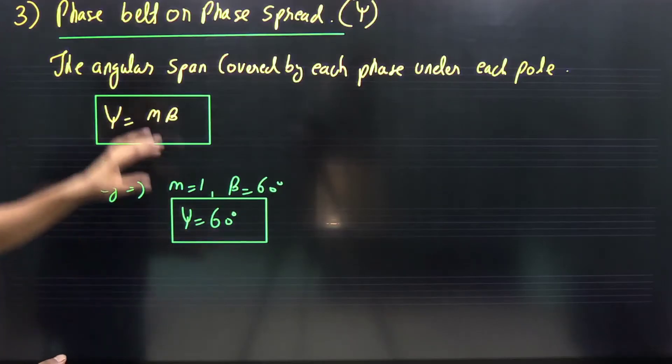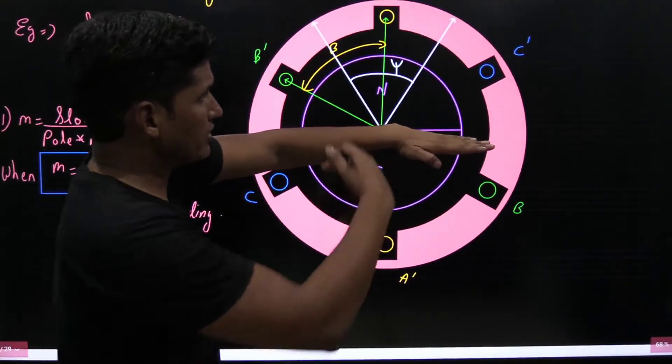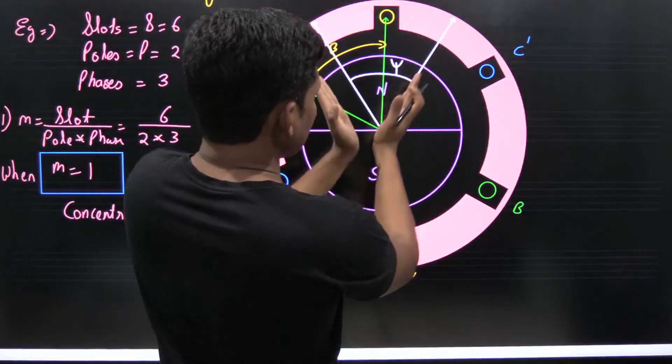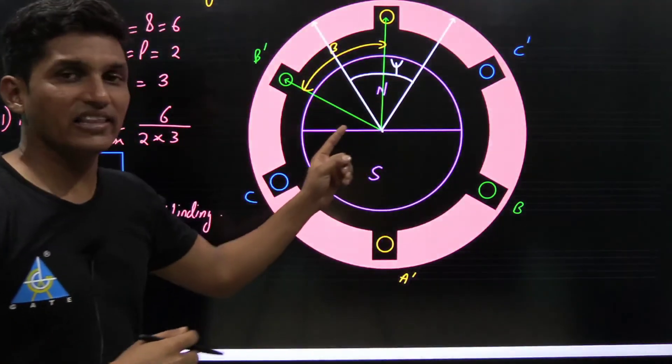Under each pole, that is under north pole, phases A, B, C - the phase spread covered by each phase under each pole is xi. In this particular example, xi is 60 degrees.